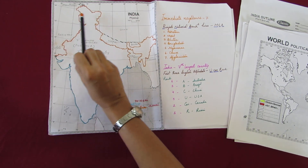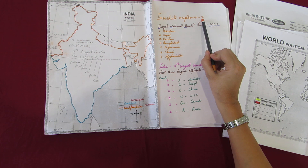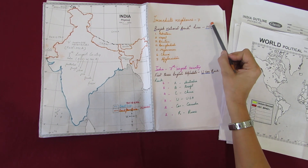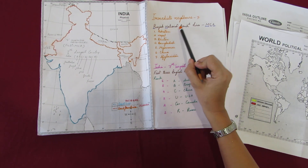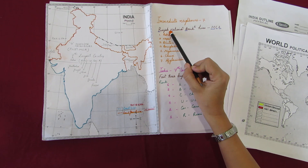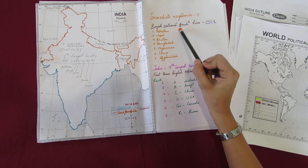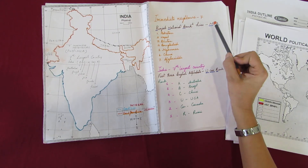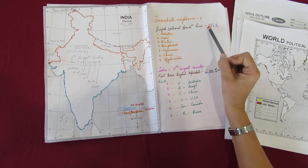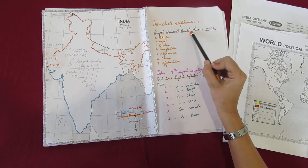India shares this huge land frontier with 7 neighboring countries. An easy way to remember these 7 immediate neighbors is through the statement 'Punjab National Bank hires MCA.' Each initial letter stands for a neighboring country: P for Pakistan, N for Nepal, B for Bhutan, B for Bangladesh, M for Myanmar, C for China, and A for Afghanistan. Thus, we have the 7 immediate neighbors of India learned through this simple statement.